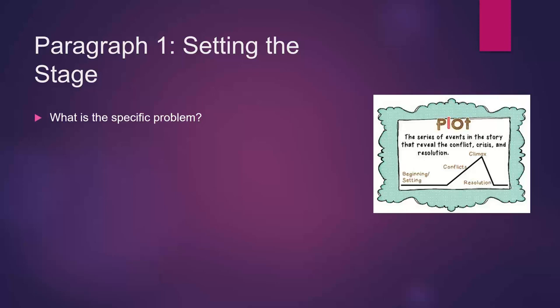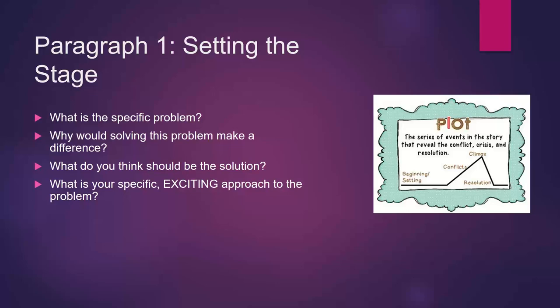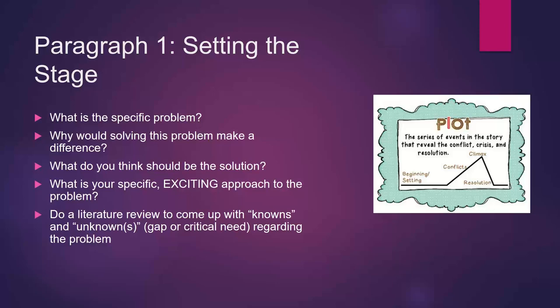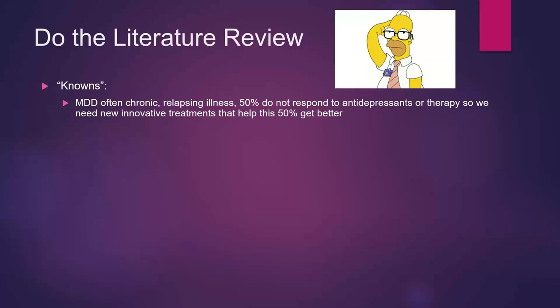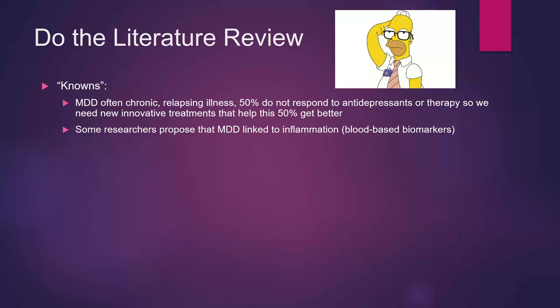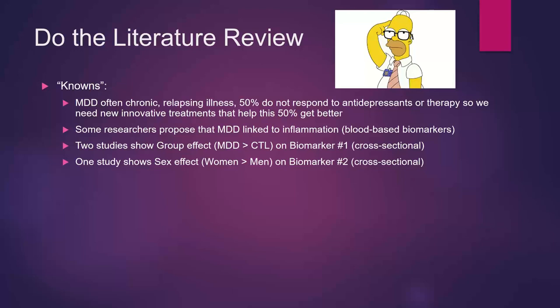Let's start with paragraph one — setting the stage. What's the specific problem you're tackling and why would solving it make a difference? You're going to do a literature review to identify knowns and unknowns, the gap or critical need. The knowns might be: MDD is an often chronic relapsing illness; 50% do not respond to antidepressants or therapy, so we need new innovative treatments. Some researchers propose that MDD is linked to inflammation measured by blood-based biomarkers, with published studies showing MDD has higher levels than controls on biomarker one, and a sex effect where women have higher levels than men on biomarker two — but again, this is cross-sectional data.